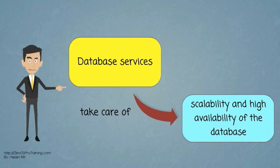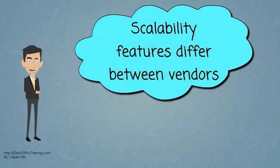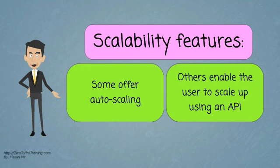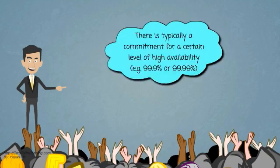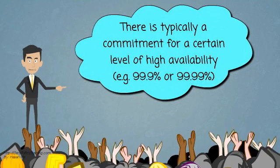Database services take care of scalability and high availability of the database. Scalability features differ between vendors. Some offer auto scaling, while others enable the user to scale up using an API but do not scale automatically. There is typically a commitment for a certain level of high availability, for example 99.9% or 99.99%.